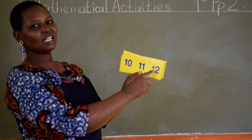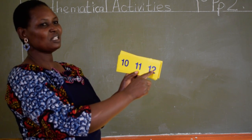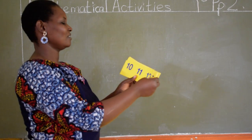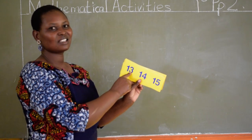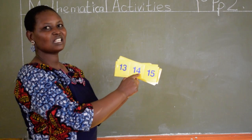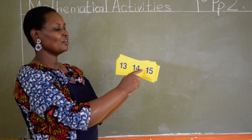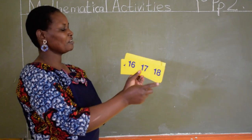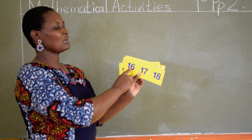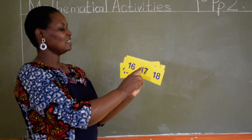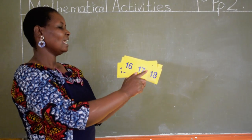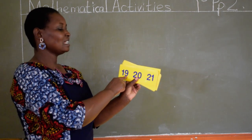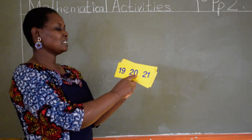Can you say 12? Somebody is saying 12. 12, 13, 14, 15. From number 15 we move to number 16. Then 17, 18, 19, 20.